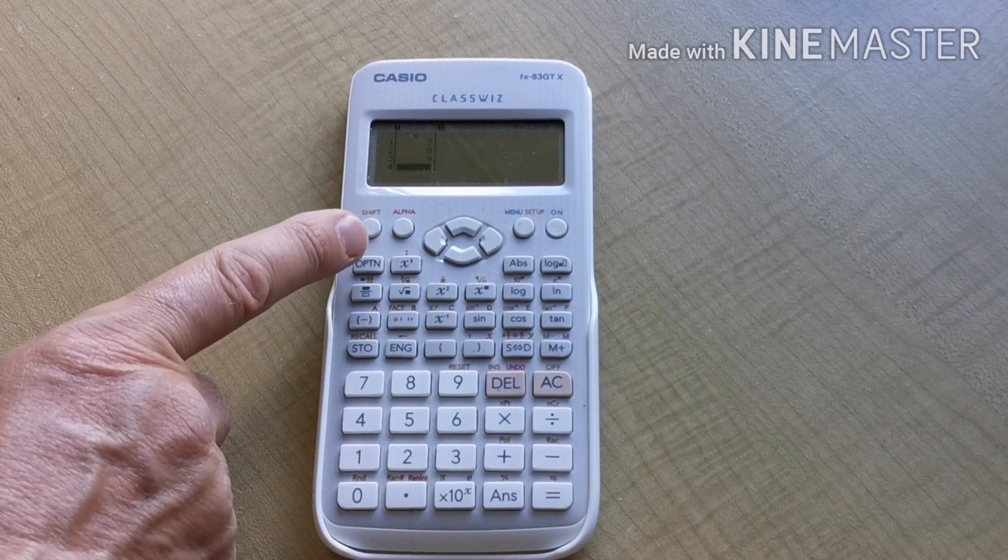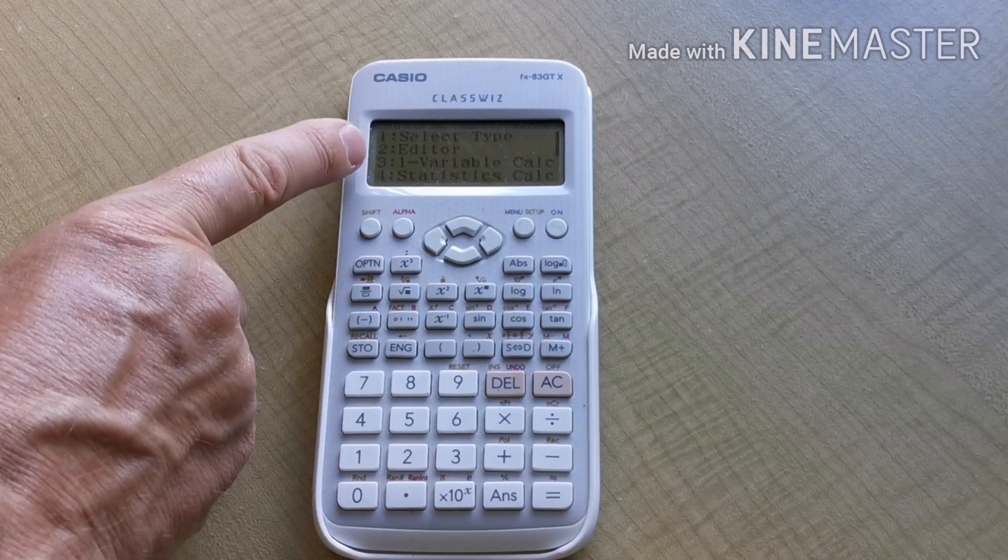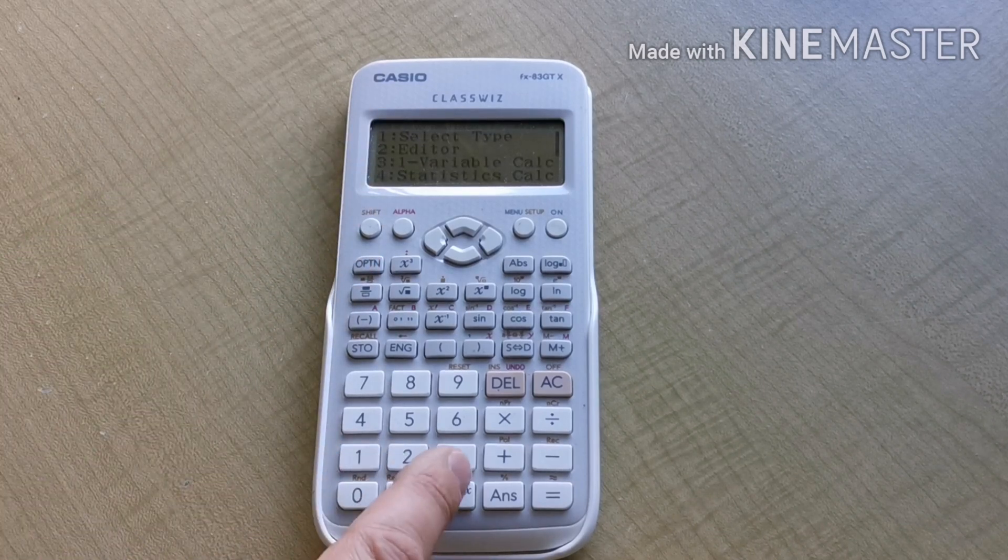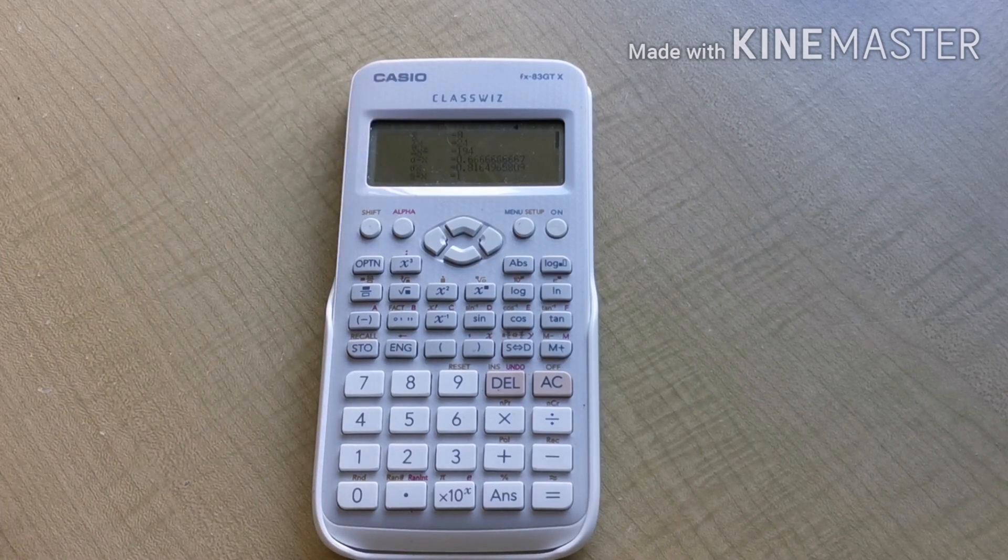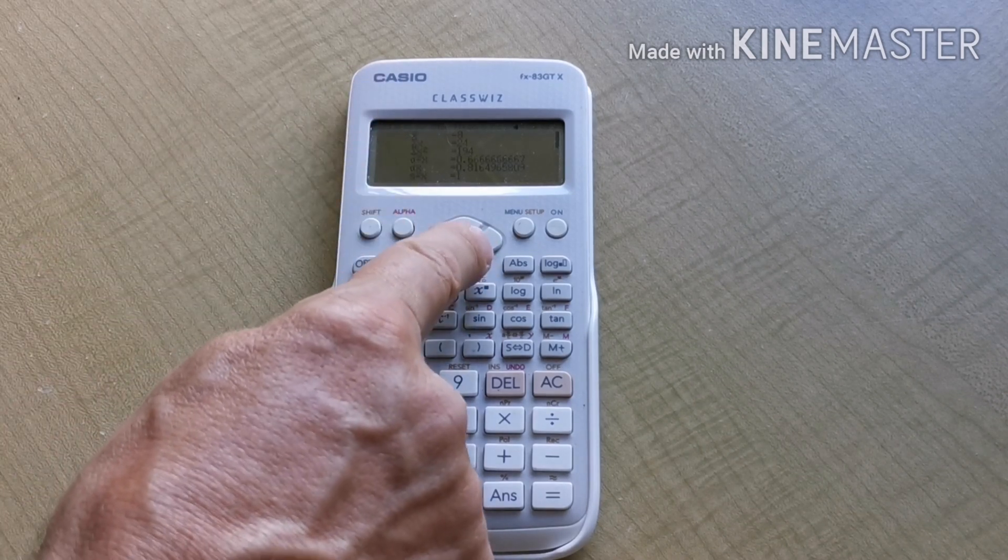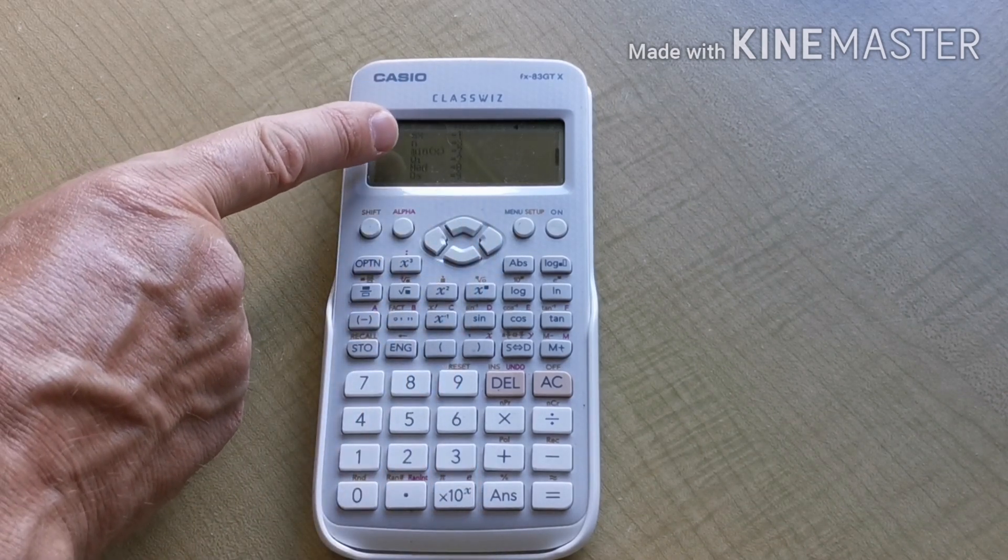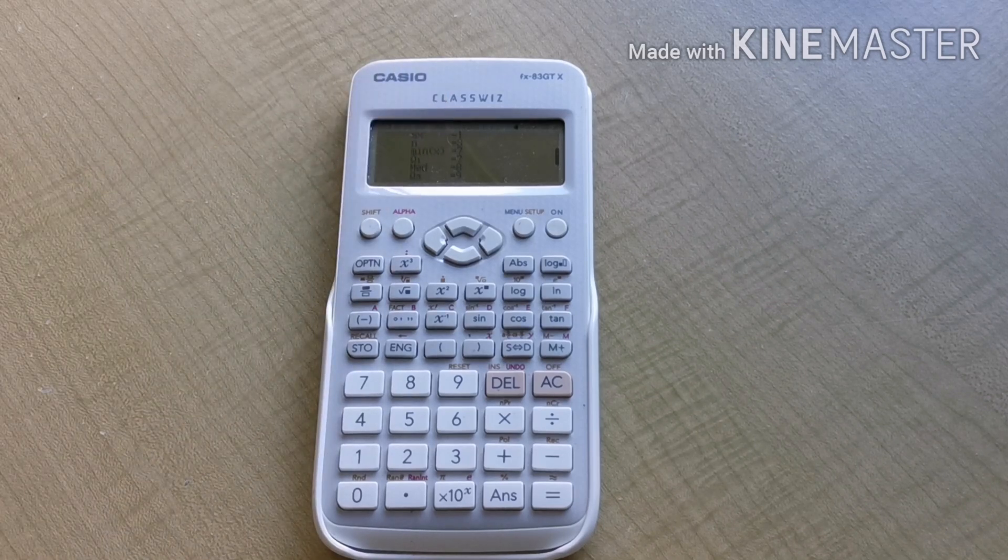Now press the option key to get the results and choose number 3, 1 variable calculations. Number 3. There's the mean X bar equals 8 at the top of the screen. I know it's in small print. And I just scroll down. SX, the standard deviation equals 1.